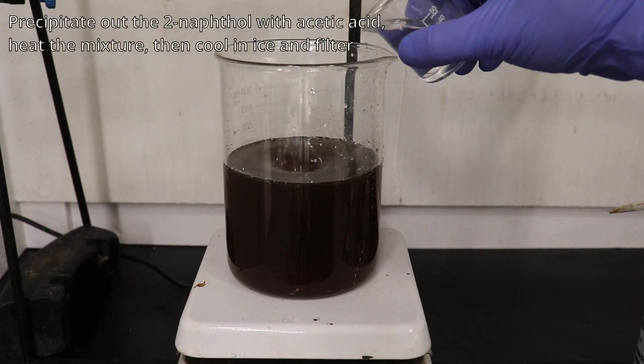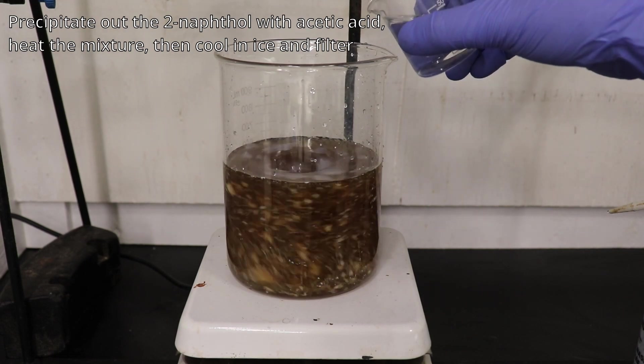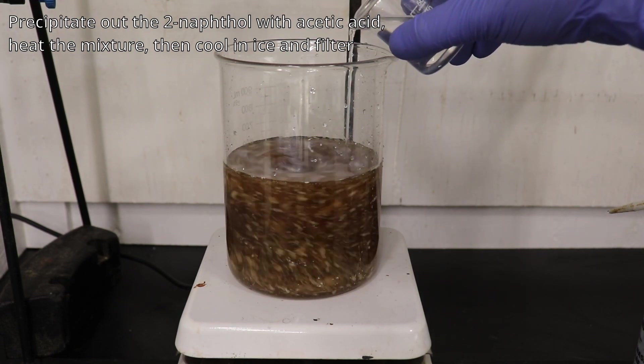The 2-naphthol was then precipitated from the filtrate using acetic acid, and the precipitate was again heated to near boiling and cooled in ice to aid in filtration.